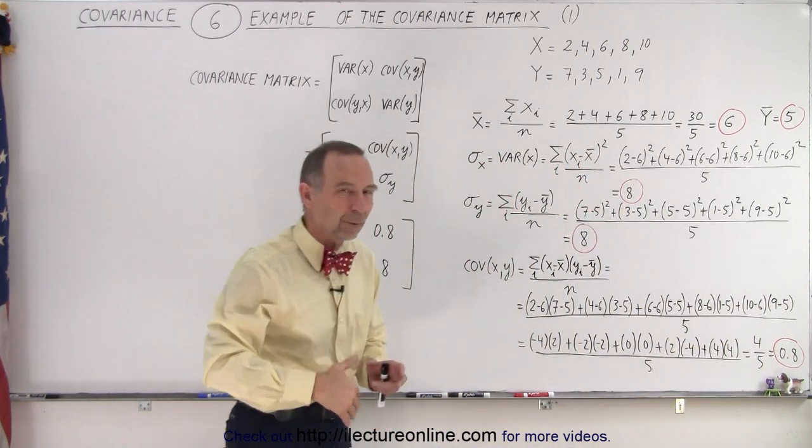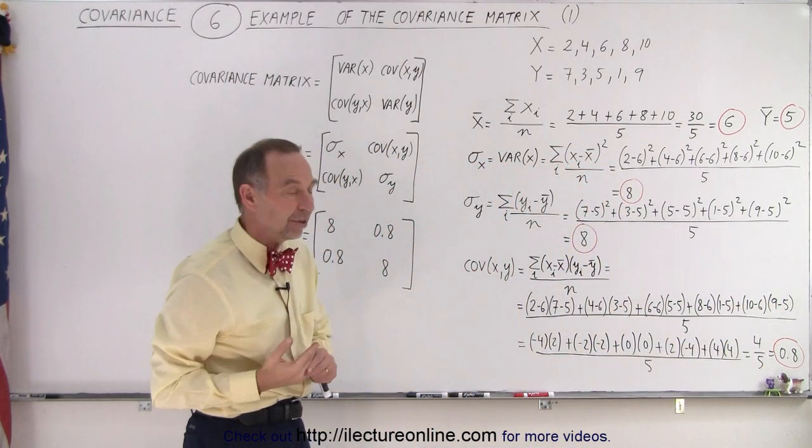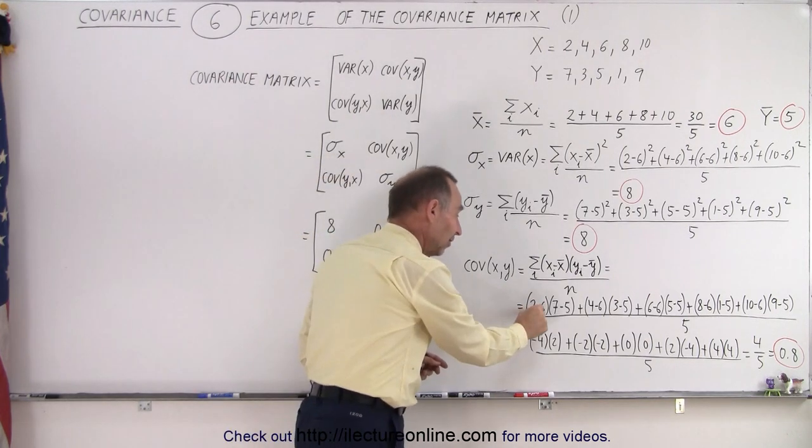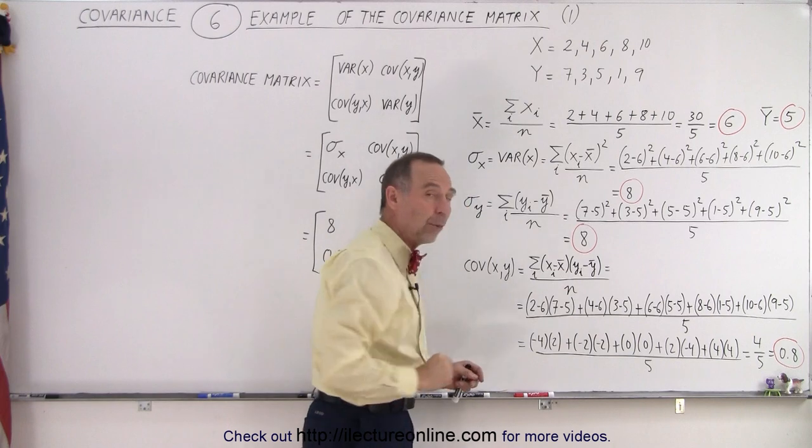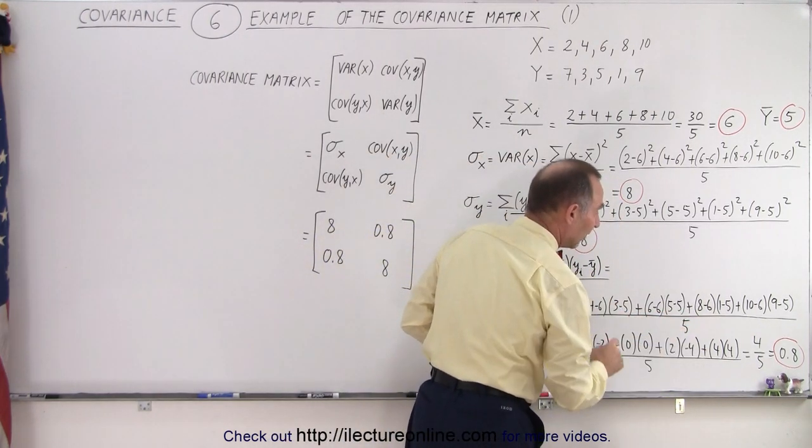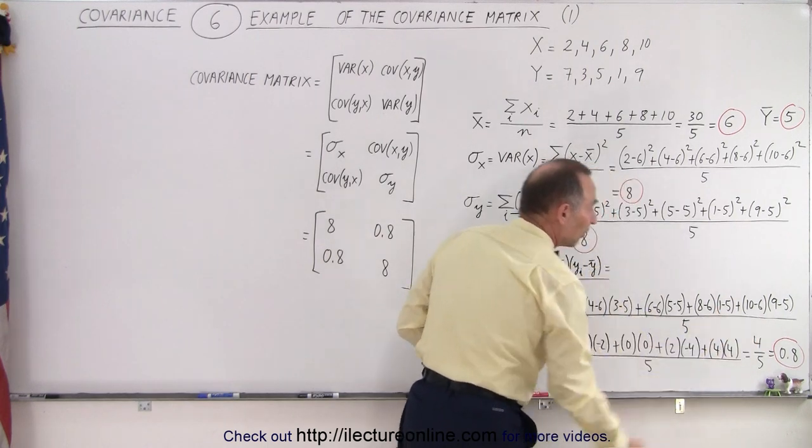In each case, we subtract the average from each of the five numbers in the data set. We multiply that difference of the X values times the difference in the Y values. We add them all up, divided by the total number of numbers in the data set, and in this case we get 0.8.